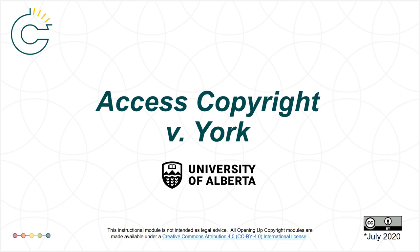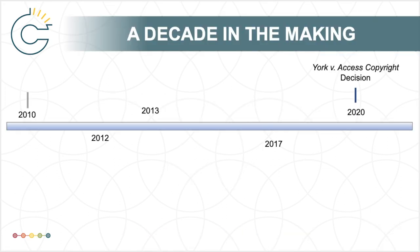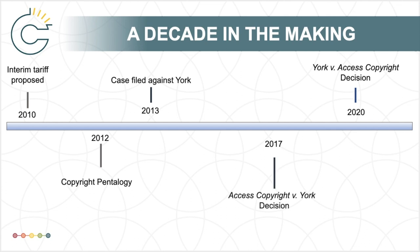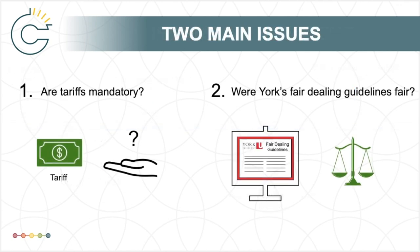Welcome to the University of Alberta's Opening Up Copyright instructional module on Access Copyright v. York. In April 2020, the Federal Court of Appeal released a decision on the York v. Access Copyright case, a case already over a decade in the making. The outcome continues to be very important to educational institutions and copyright collectives alike. The main issues revolve around whether tariffs approved by the Copyright Board are mandatory and whether York's fair dealing guidelines were fair.